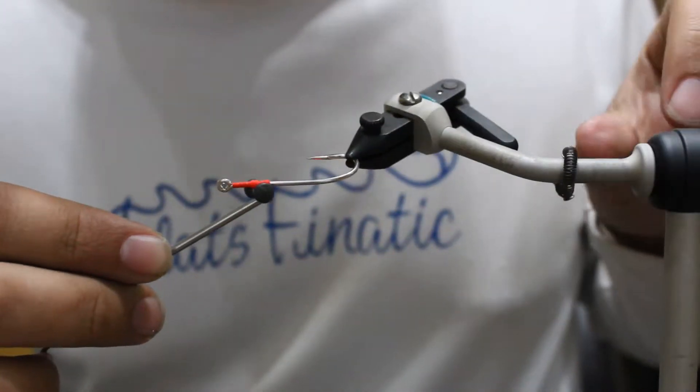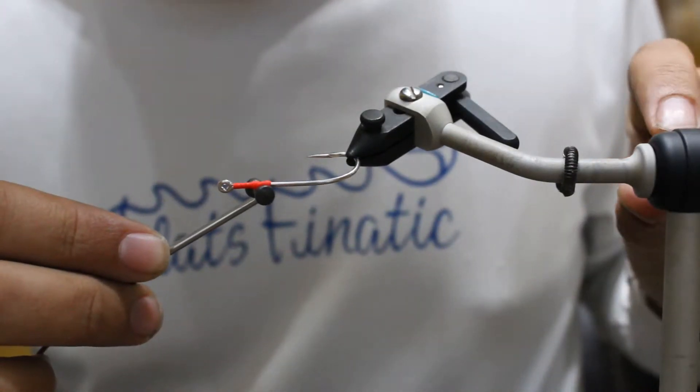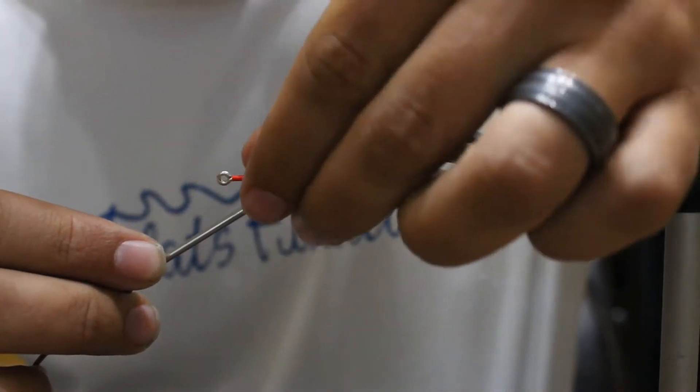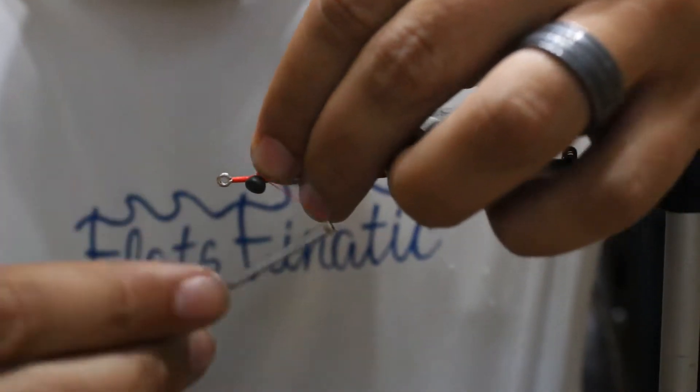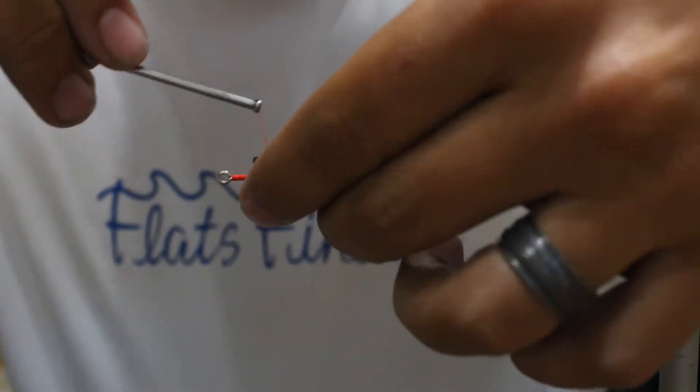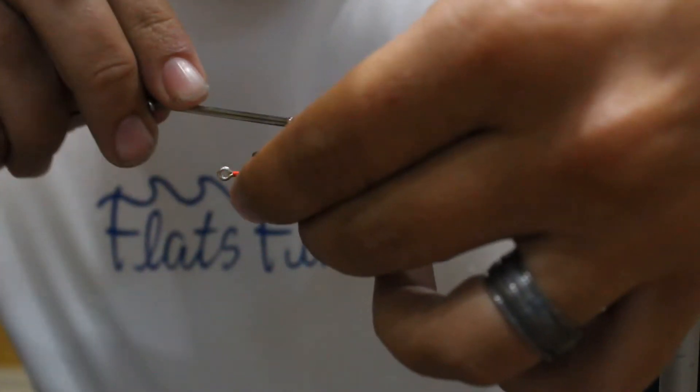It's kind of hard trying to angle it to where you can see it. Let me get this angled right first. So three across the top going one way, then three across the top going the other way, just like on the bead chain eyes.